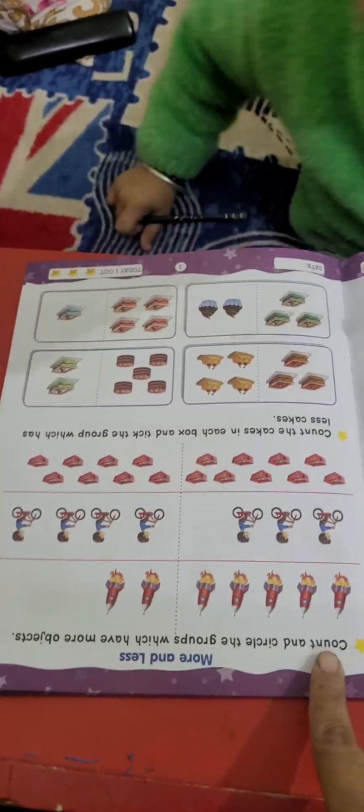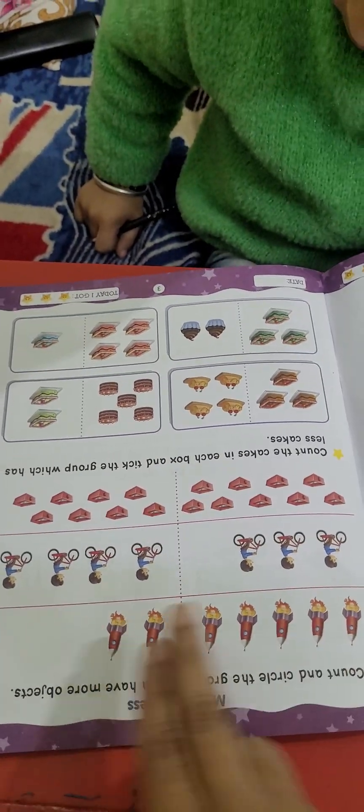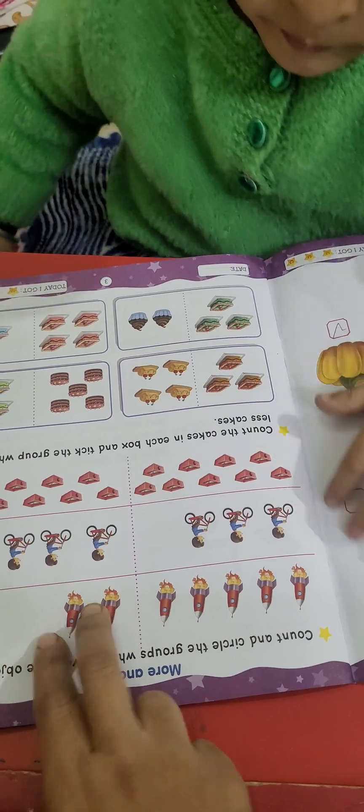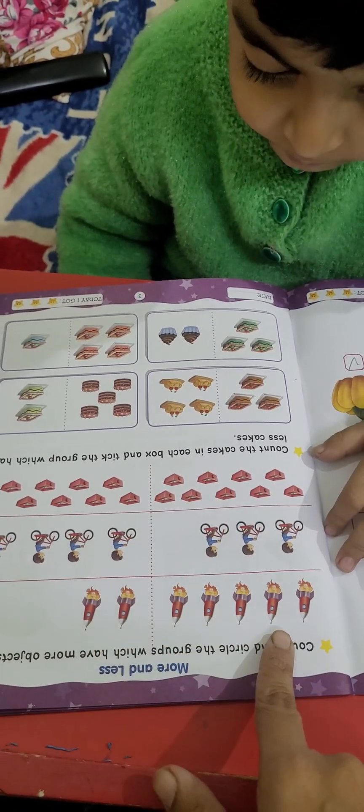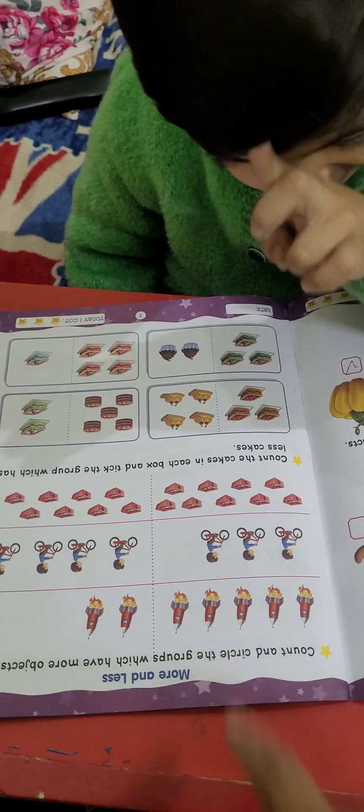Very nice. Vedansh, there are two sections. This one and this one. Count which one is less. Which one is more, sorry. Which one is more? This one or this one?